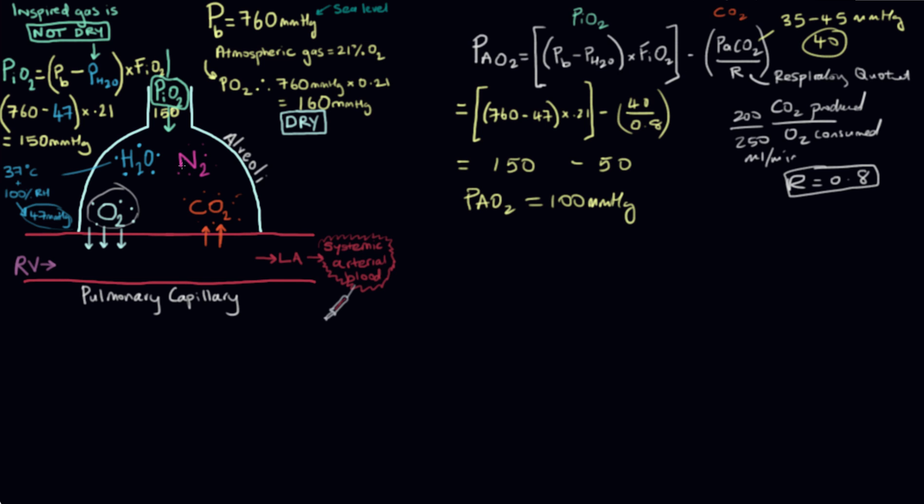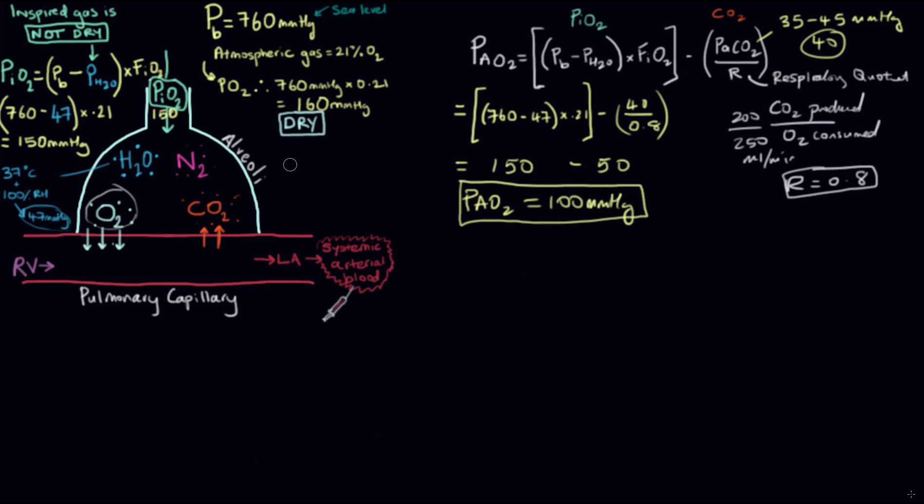So you can see here that when we entered the alveolar space, the gas that we breathed in, the PIO2 was 150 millimeters of mercury. But then once we accounted for the fact that there's going to be CO2 hanging around in the alveolar space, that brought it down to 100 millimeters of mercury. So that's how you use the alveolar equation, but now we need to know why it's useful, and we'll talk about that in the next video.